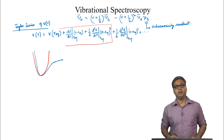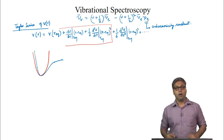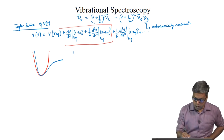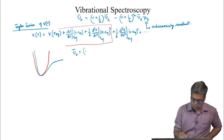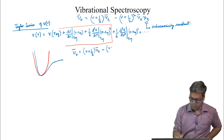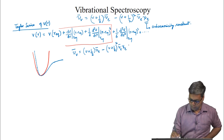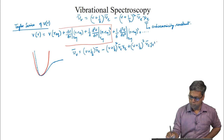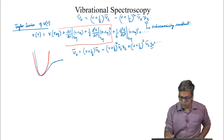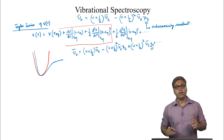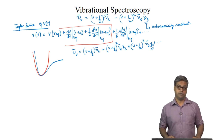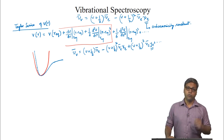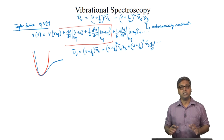Although the Morse oscillator is quite useful in practice, a more general expression is nu-bar_V equals (V + 1/2)nu-bar_E minus (V + 1/2)² nu-bar_E chi_E plus (V + 1/2)³ nu-bar_E y_E plus higher terms. Here y_E, like chi_E, is also an empirical dimensionless constant characteristic of the molecule. These constants are used to fit the experimental data and to find the dissociation energy of the molecules.